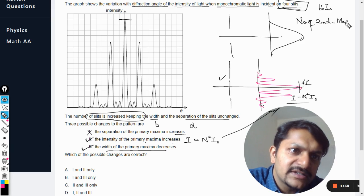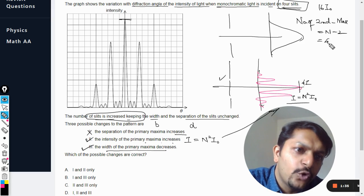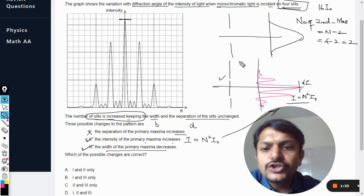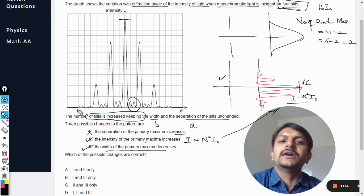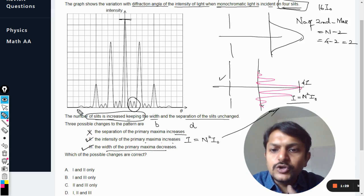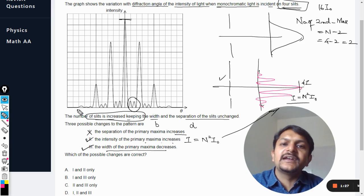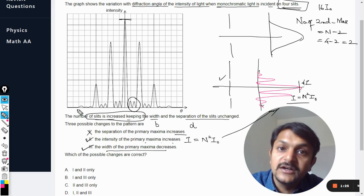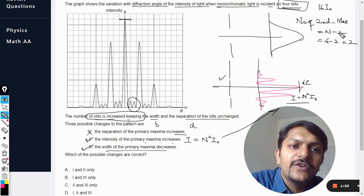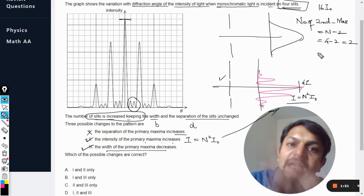So number of secondary maximas will be equal to n minus two, which is four minus two, and that is two. So there will be only two secondary maxima here. But now because you have increased the number of slits, like let us say you have made it eight or ten, so now the number of secondary maxima will become ten minus two, that is eight.